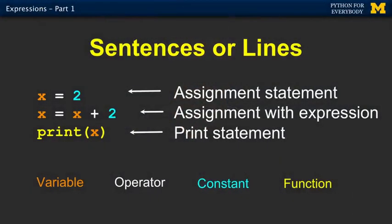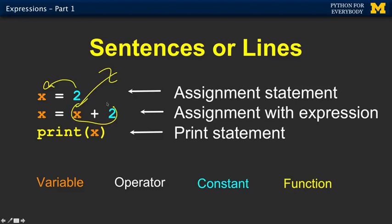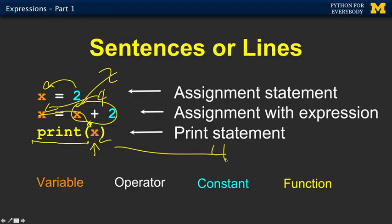Now we weave these things into sentences or lines. This is just another sequence of code showing how you can use the variable on the right-hand side. Put 2 in some memory and label it x. Pull that 2 back out and add 2 to it — so this becomes 4 — and then stick 4 into x. Then this is a print function. Functions are the name of the function followed by parentheses and what you want to print. So this causes 4 to come out. Print is the function you call to cause output.